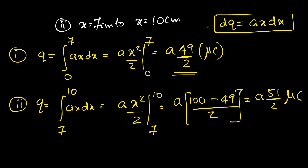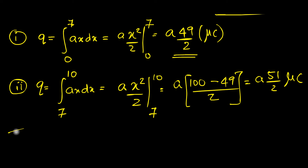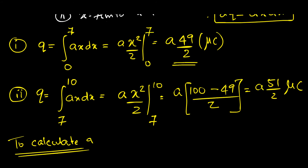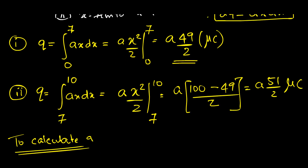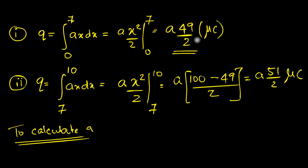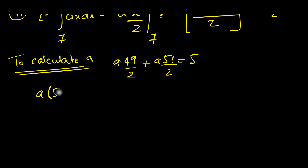We still need to find the constant a. We know the total charge over the entire 10 cm is 5 microcoulombs, so we add the two results: a·(49/2) + a·(51/2) = 5. This gives a·(100/2) = a·50 = 5, so a = 0.1 cm⁻¹.